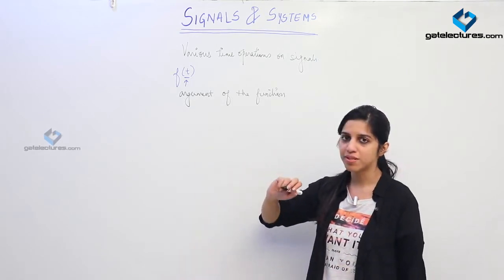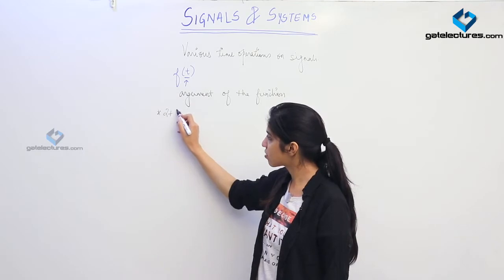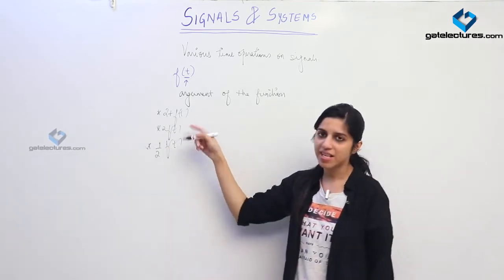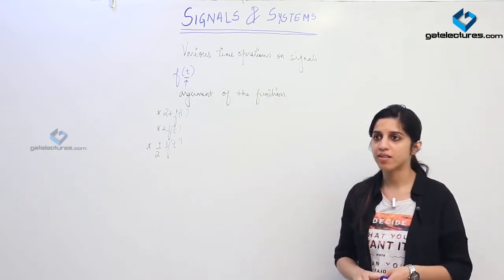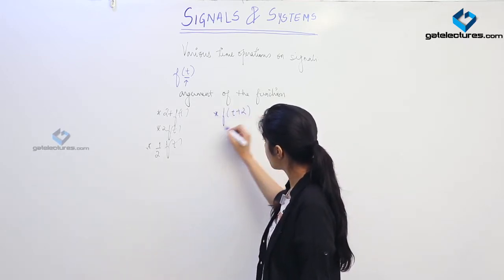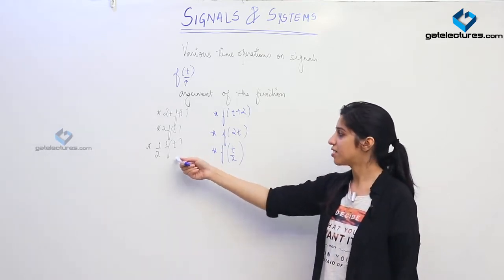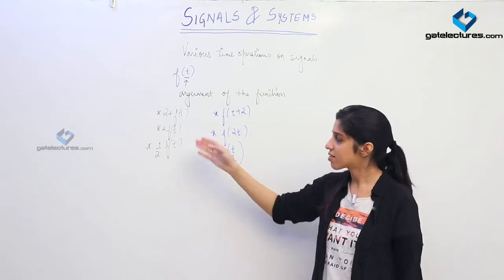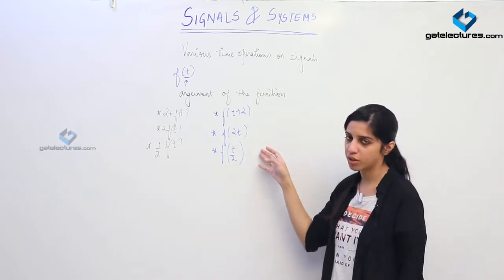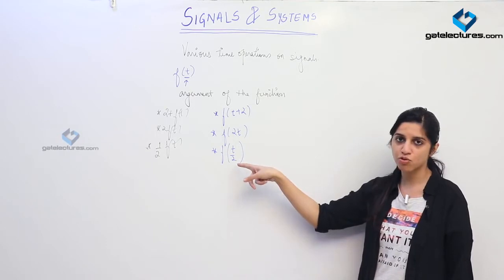For doing all this, what we have to consider is whether we are multiplying, dividing, or doing something with the function itself — for example 2 + f(t), 2f(t), or (1/2)f(t). When we are multiplying, dividing, or adding something to the function itself, it changes the output of the function — it changes the value of the function. When we are performing the same operations with the argument of the function, then the function is just going to shift, compress, or expand in the time domain.